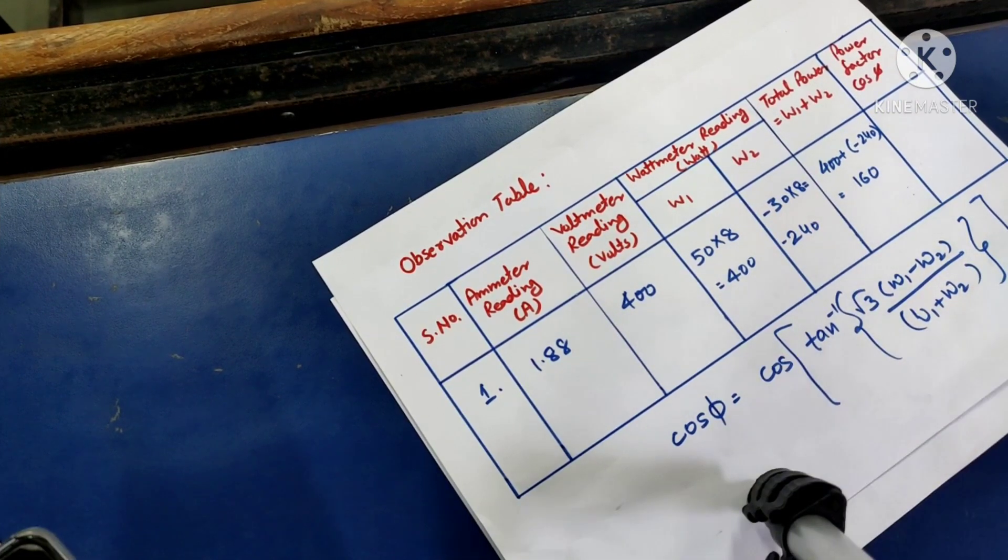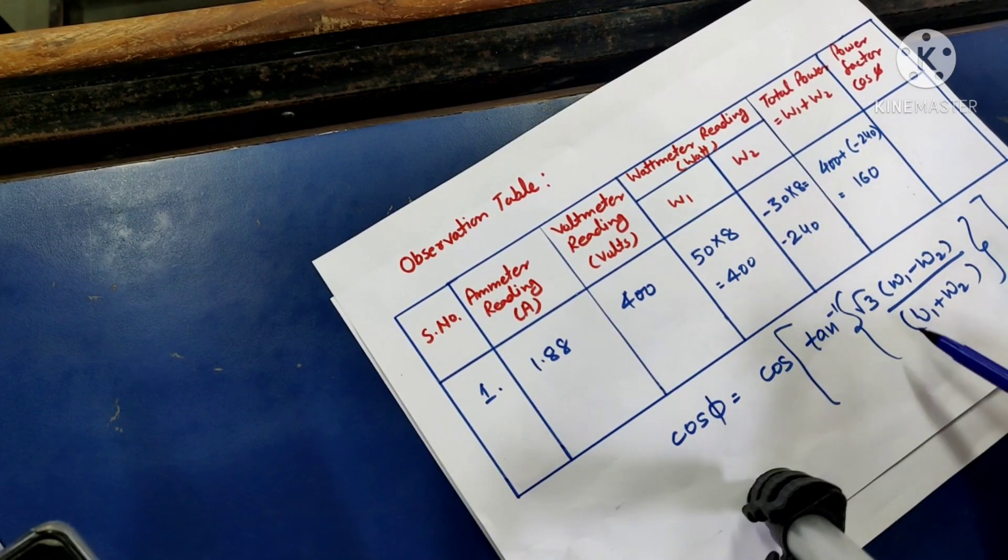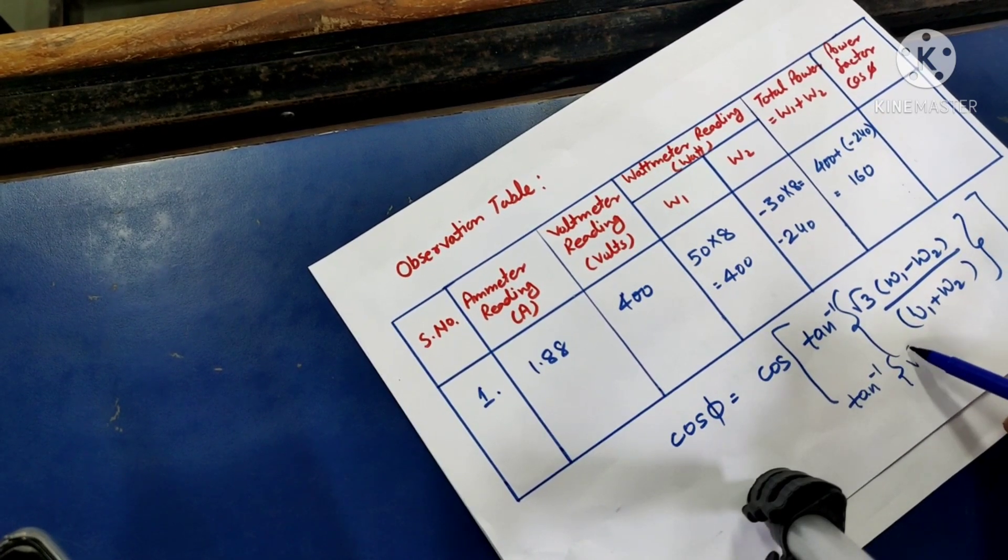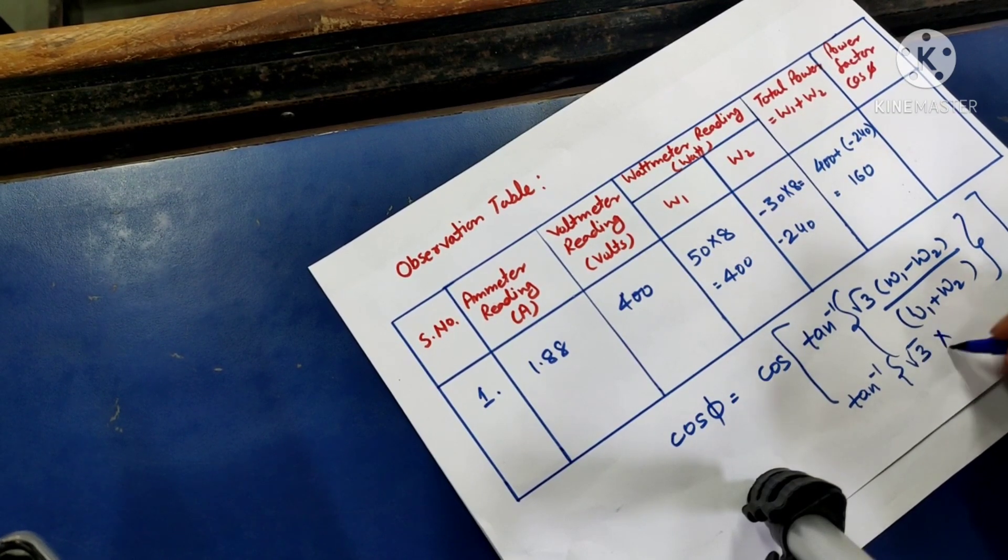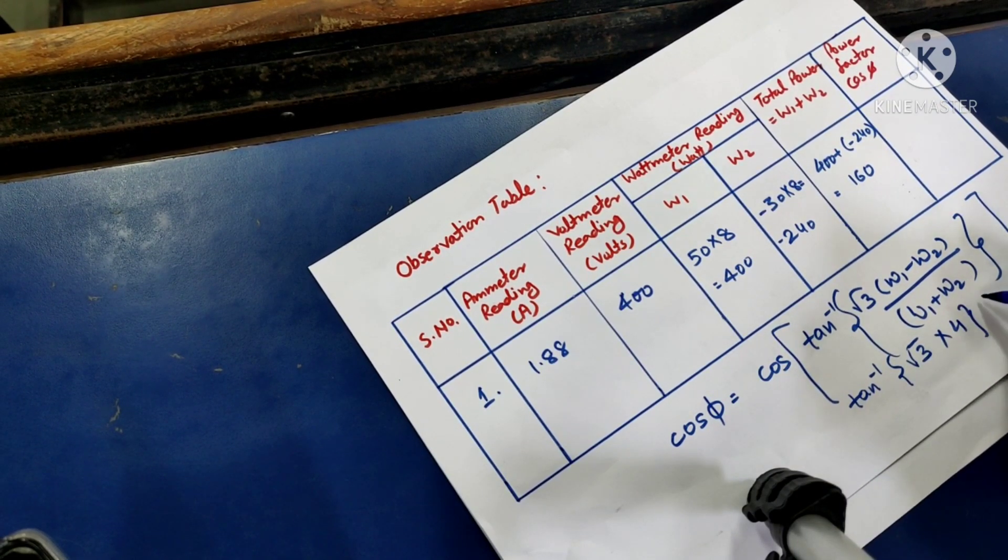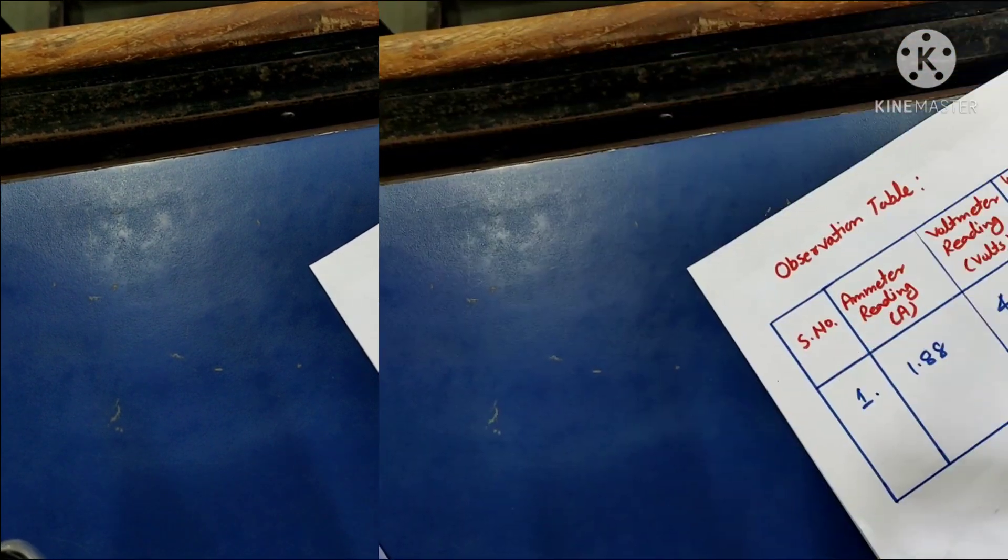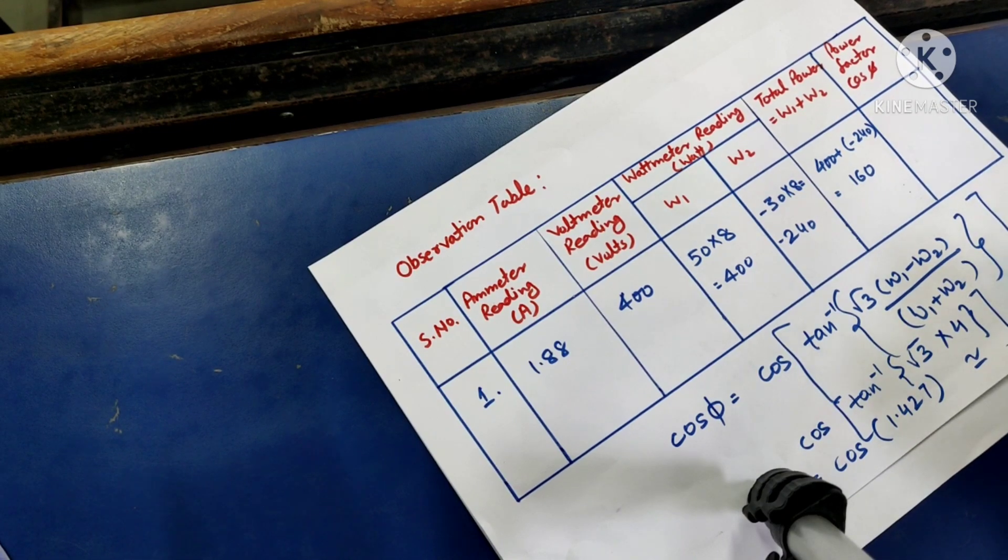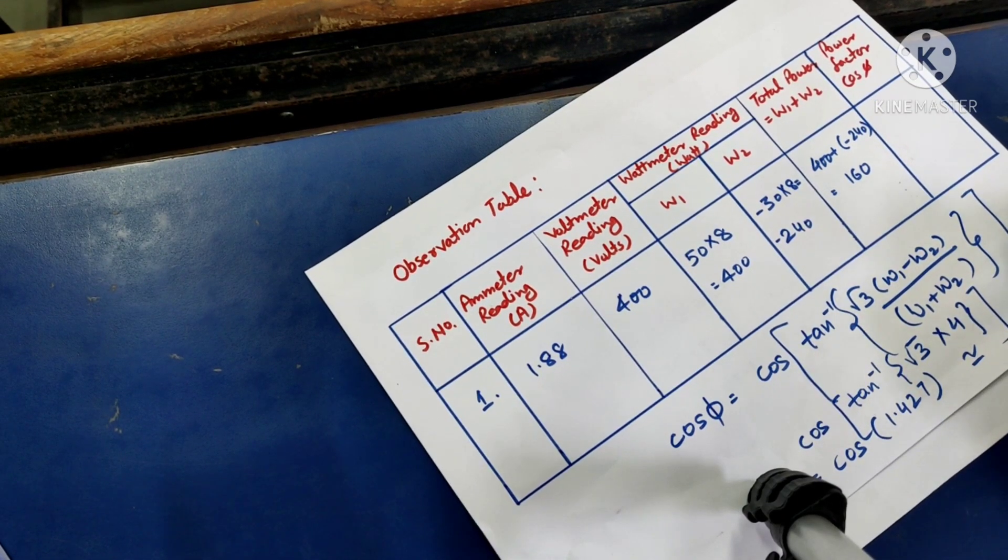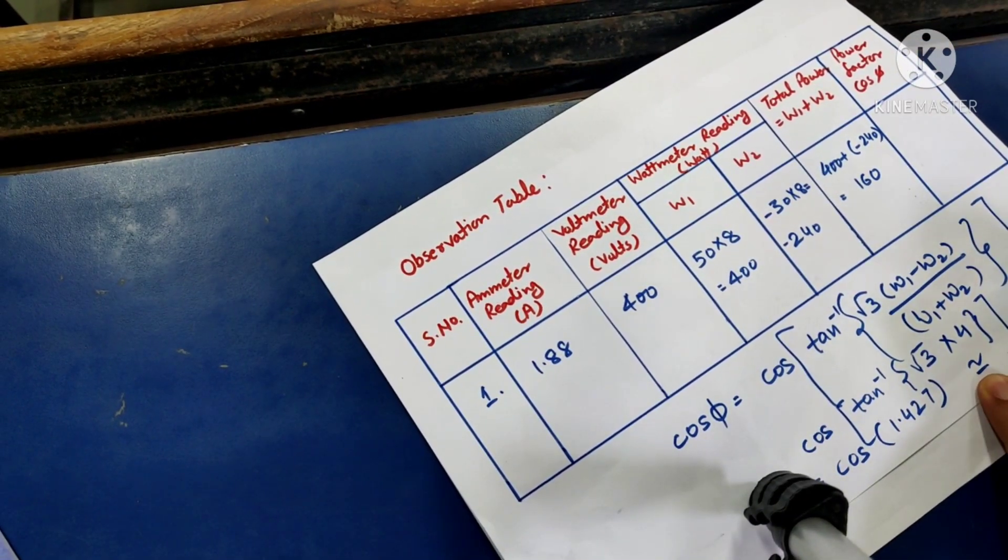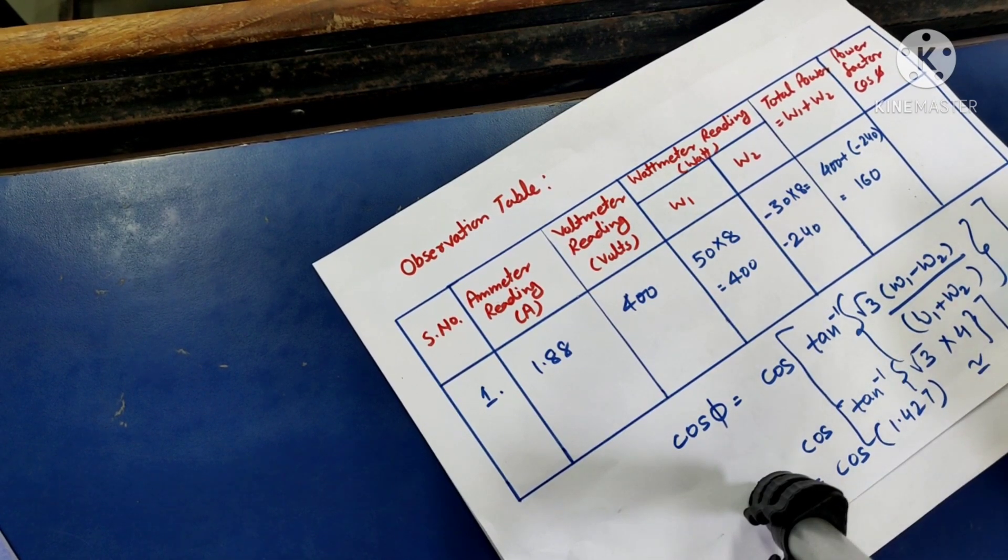So your cos phi, which is your power factor, can be calculated with the help of this formula, which turns out to be root 3 into tan inverse of W1 minus W2 over W1 plus W2. So now taking cos of 1.427, which will give us approximately 0.1433. So this is the power factor for our load.